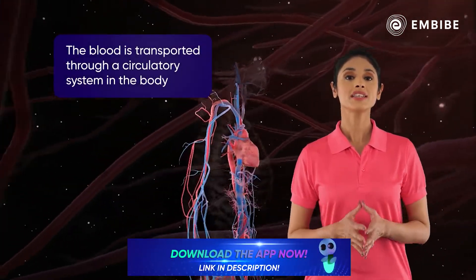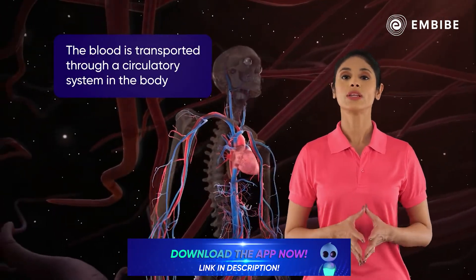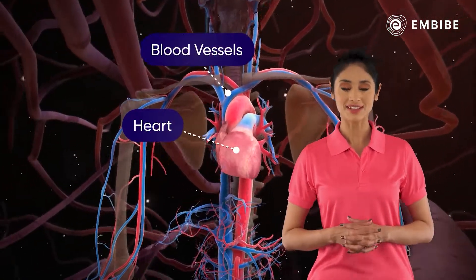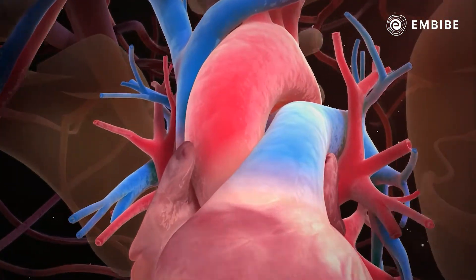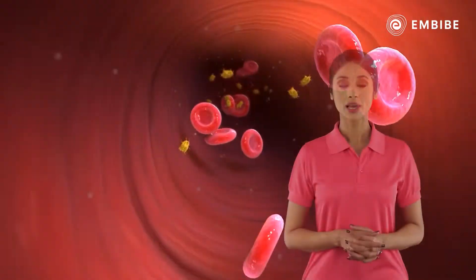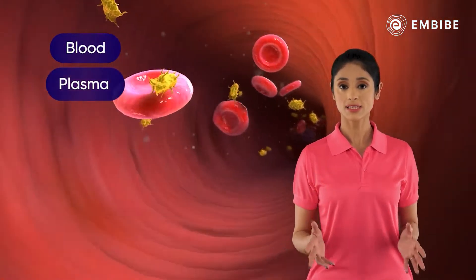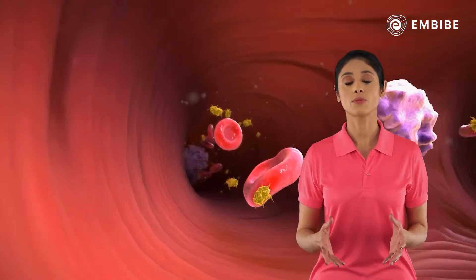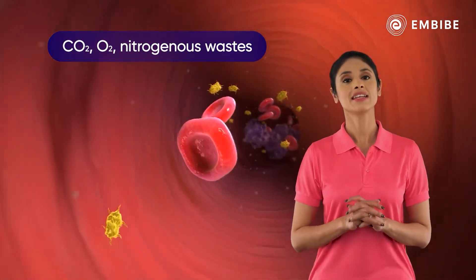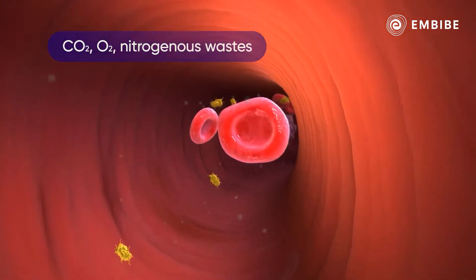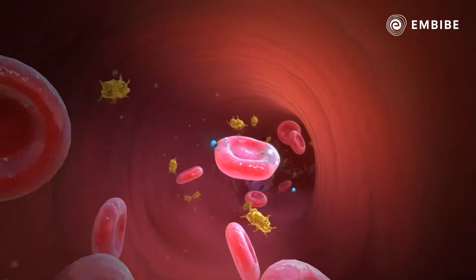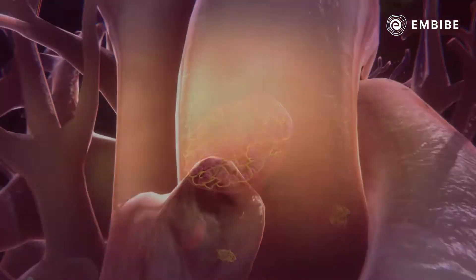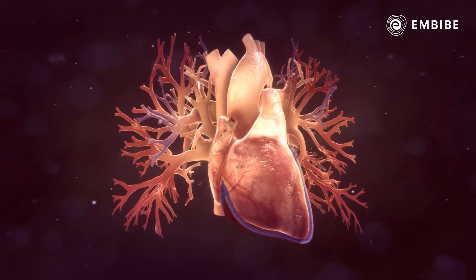In the human body, blood is transported through a circulatory system, which consists of the central pumping organ — the heart — and the blood vessels. Blood has a fluid medium called plasma, in which the blood cells are suspended. The plasma helps transport carbon dioxide, oxygen, and nitrogenous wastes. The oxygen in the blood is mainly transported by hemoglobin. This blood is transported through the entire body with the help of the heart.